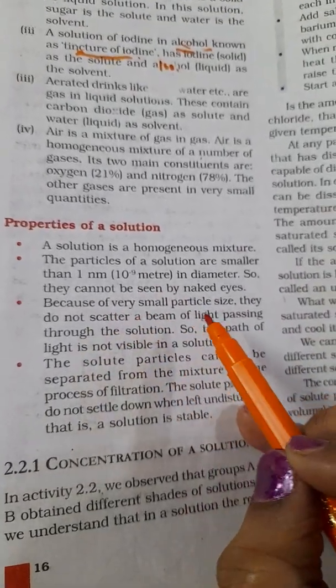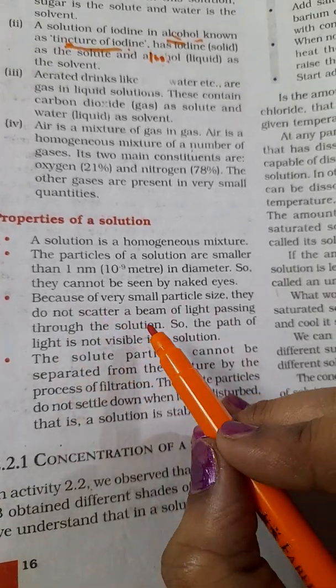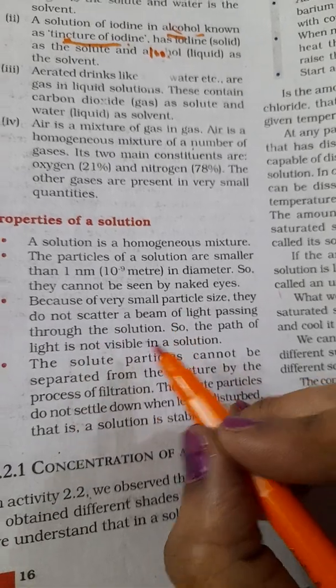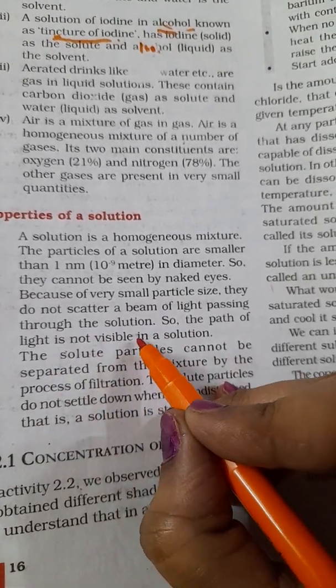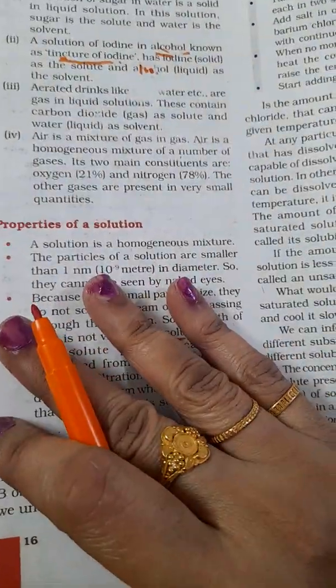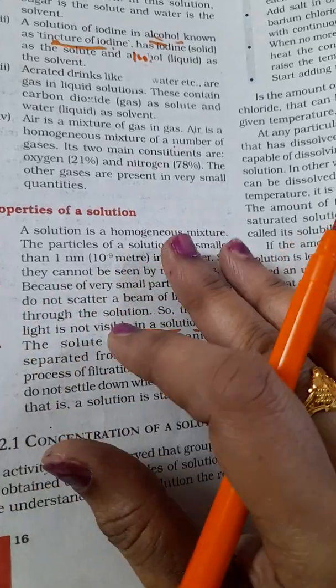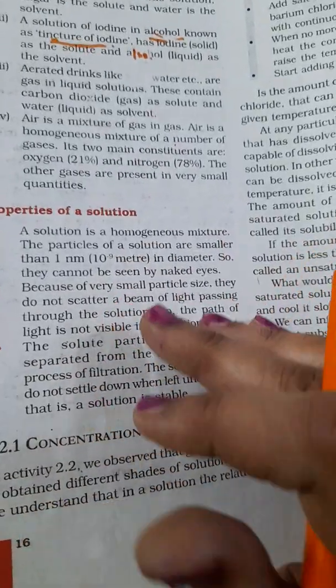Because of very small particle size they do not scatter light beam passing through the solution. So the path of light is not visible in the solution. If particles are little larger they can scatter the light and you can see the path of the light, but here you cannot see that.